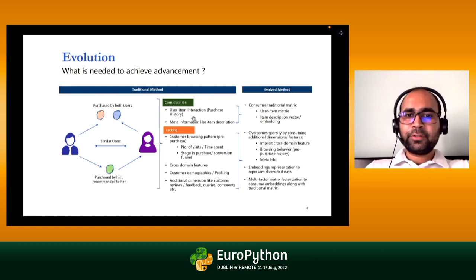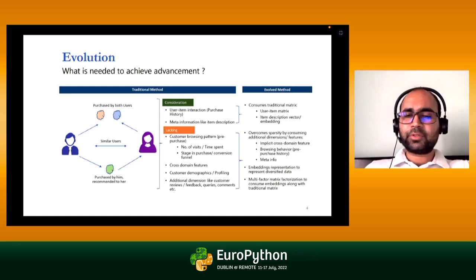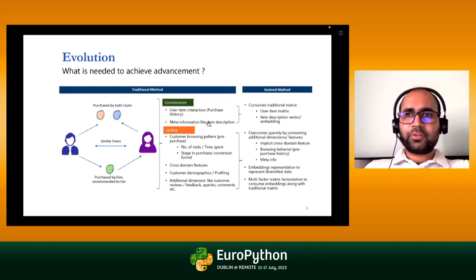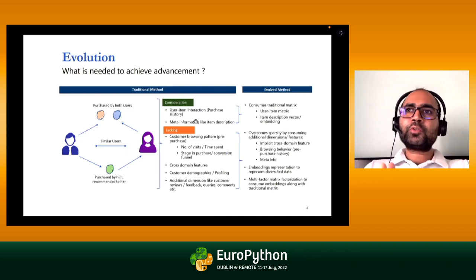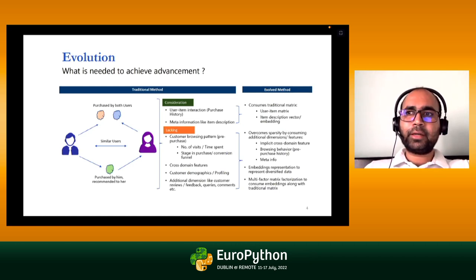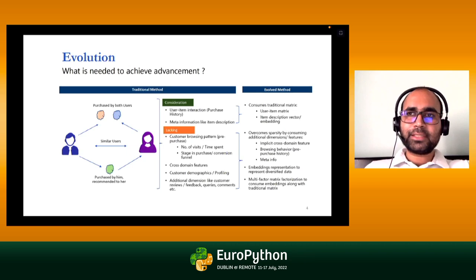There are challenges with traditional methods. First, they only consider user-item interaction. At most, they can take meta information — like item description — but that requires creating a hybrid system using some classification approach. Also, when using historical data, only completed transactions are captured. A user may have been interested but not purchased at that point in time due to changing priorities — that interest is lost.